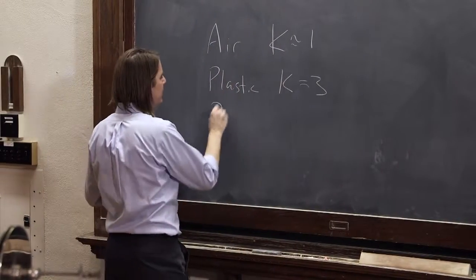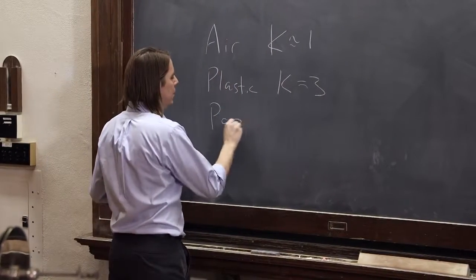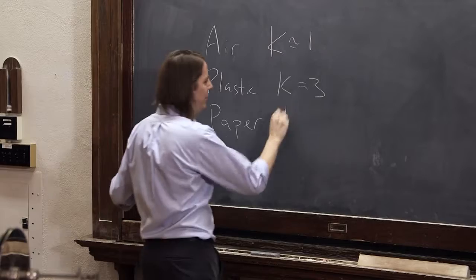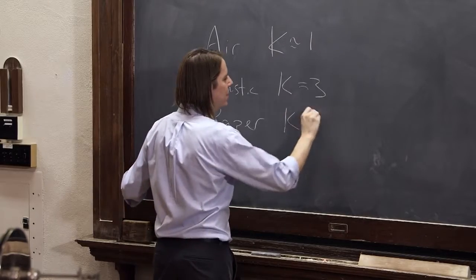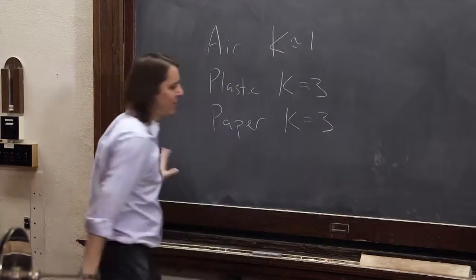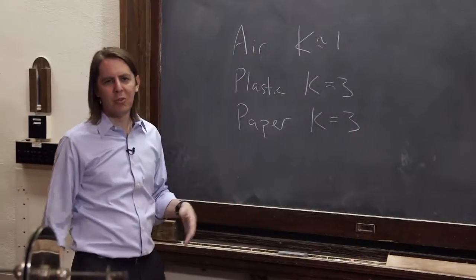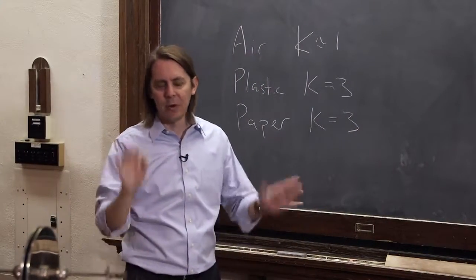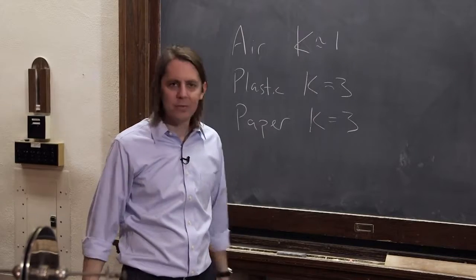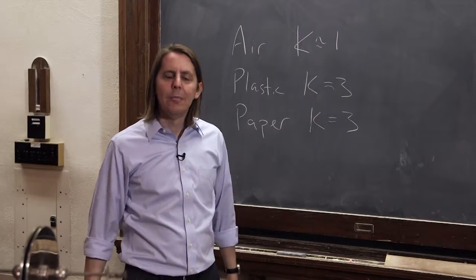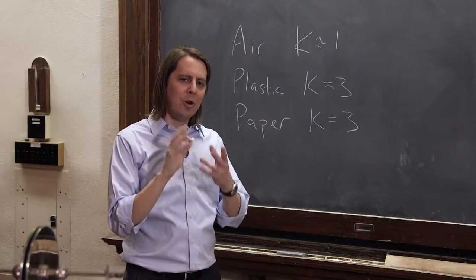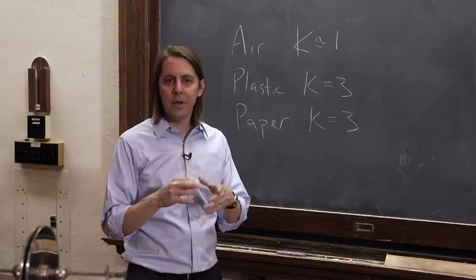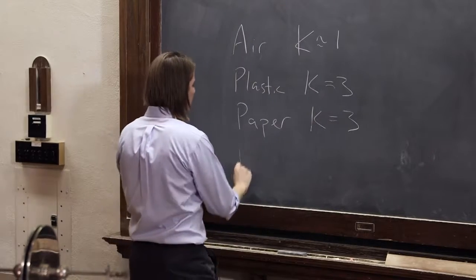You could put essentially any insulator. We always do paper and plastic — paper is about K=3. Most of these common insulators sit somewhere in the range of 3 to 5. But then depending on the molecular structure of the insulator, you can get different values.